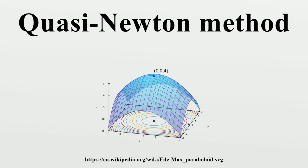The first quasi-Newton algorithm was proposed by William C. Davidon, a physicist working at Argonne National Laboratory. He developed the first quasi-Newton algorithm in 1959.